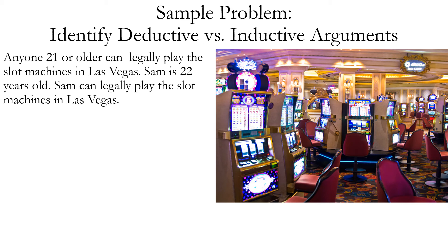Here's our first sample. Anyone 21 or older can legally play the slot machines in Las Vegas. Sam is 22 years old. Therefore, Sam can legally play the slot machines in Las Vegas. Is this a deductive or inductive argument? This is deductive. We know this because it is deductively valid, and having it be valid means it must be deductive. Not all deductive arguments are valid, but all valid arguments are deductive.